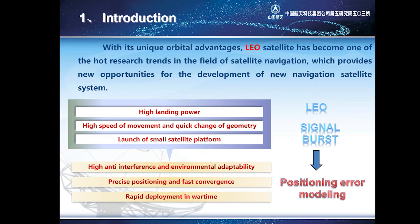Based on the above advantages of LEO satellites, the research of broadcasting navigation signals by means of LEO satellites is becoming more and more popular. Based on this background, this paper focuses on the LEO navigation signal and models the positioning error of the LEO constellation signal burst, which provides reference for the construction of LEO navigation systems.